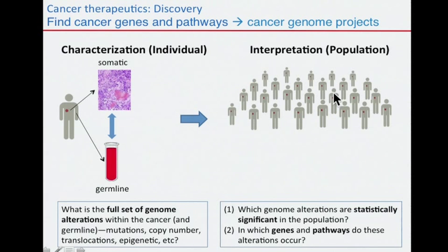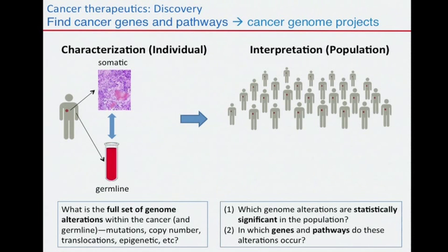Many of you have probably seen this slide. It goes through the basic notion of how genome and exome data is analyzed in sequencing projects. The tumor and the matched normal are extracted from a patient and compared against each other to characterize the most important somatic genetic alterations: single-nucleotide variants, indels, copy number alterations, translocations, et cetera.